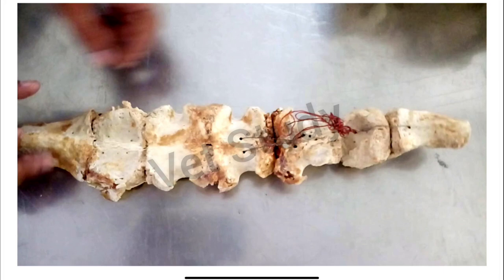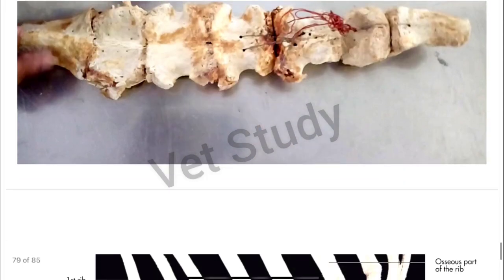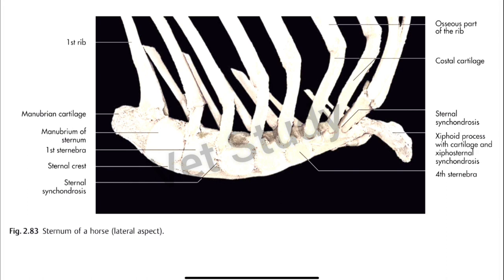If we talk about the ends, there are two ends: cranial and caudal. The cranial end is known as the manubrium, and it is formed by the first sternibrae. It forms a diarthrodial articulation with the second segment, while the other segments are fused together. The caudal segment is formed by the xiphoid cartilage, which is a thin plate-like structure attached to the last sternibrae.